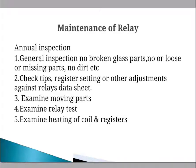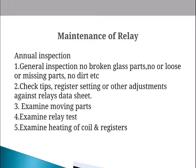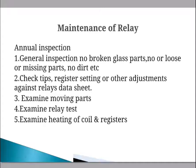In the annual inspection, we have to check the general condition: no broken glass parts, no loose or missing parts. We have to check for dirt or decomposition on the relay and clean it. Check the trip settings and other adjustments against the relay data sheet.